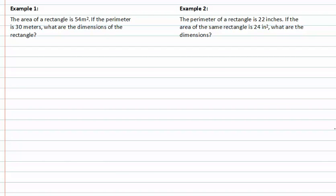Let's look at example one. The area of a rectangle is 54 meters squared, so the area equals 54. The perimeter is 30 meters, so this plus this plus this plus this equals thirty. We know that area is length times width.